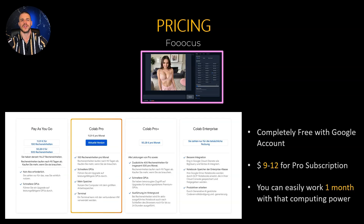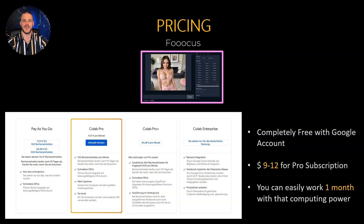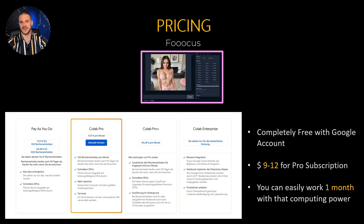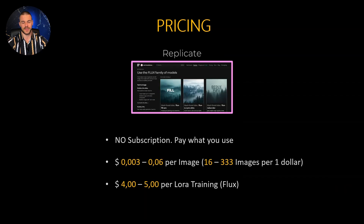Regarding the pricing of Fooocus, you actually don't need a subscription at all. If you have a Google account, you can log in for free and run Fooocus on Google Colab completely for free. Keep in mind that without a pro subscription you may occasionally get shut off and have to wait a while, or use different Google accounts to access it again. The pro subscription costs between nine to twelve dollars depending on where you live and how many taxes you pay, and this lasts easily for one month with unlimited image creation.